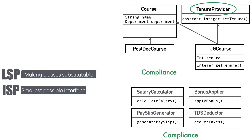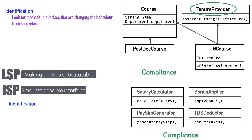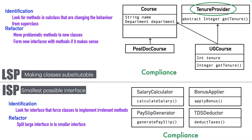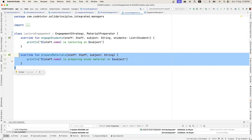To identify an LSP violation, look for methods in subclasses that are changing the behavior from the superclass. For ISP, look for interfaces that force classes to implement irrelevant methods — that is the subtle difference in how you identify LSP and ISP violations. For refactoring LSP, you move the problematic method to a new class and if necessary form new interfaces. For ISP, you split large interfaces into smaller ones and ensure your class implements only the relevant interface.